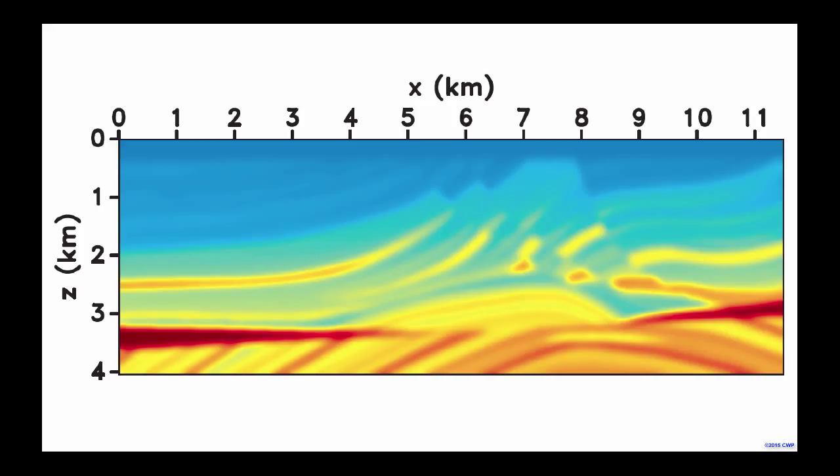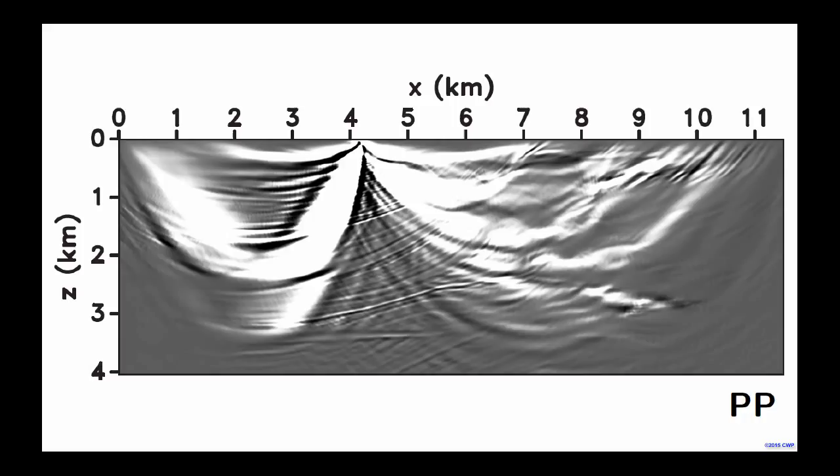As you all know, in reverse time migration, when you have velocity contrasts — for the acoustic case — you're going to have backscattered reflections that cause backscattered artifacts. For the elastic image, if you use a VP velocity like this that's not smooth enough, and a similar VS migration velocity as well, we obtain this PP image. If you correlate the P wave mode from the source wave field and the P wave mode from the receiver wave field, we obtain this for a shot migration.